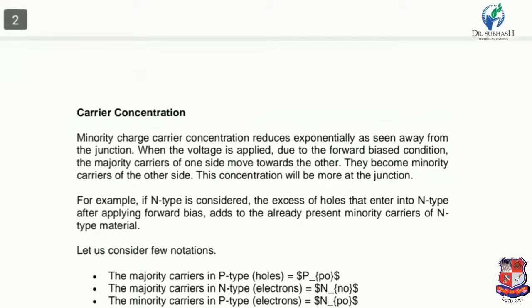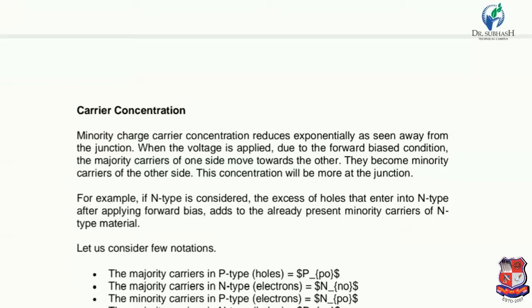Here we will discuss carrier concentration. The minority charge carrier concentration reduces exponentially as seen away from the junction. When voltage is applied due to the forward bias condition, majority carriers of one side move towards the other side and become minority charge carriers of the other side. The concentration will be more at the junction.